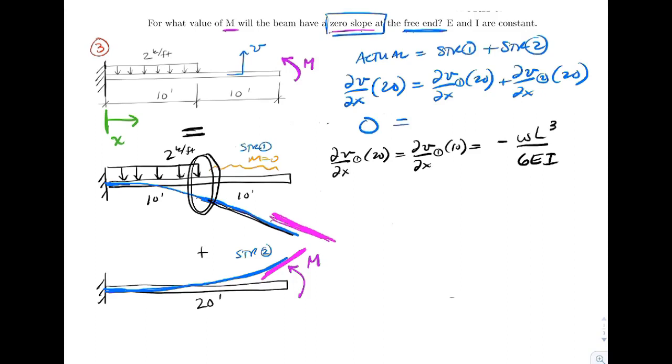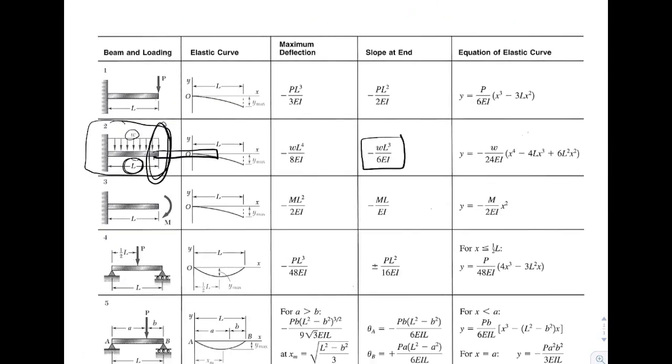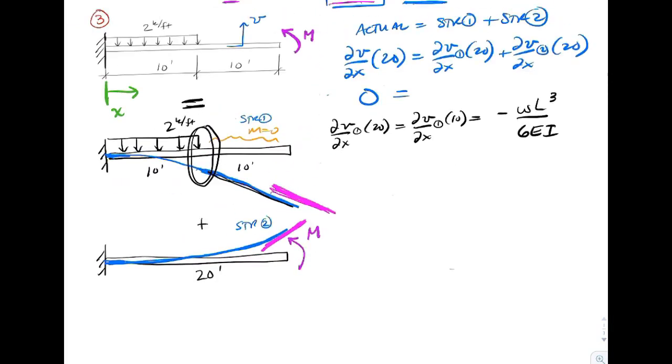Which is going to be equal to minus WL to the third over 6EI. Let's go ahead and look at that one more time. There's the WL to the third over 6EI. For our beam, the slope is down, so we're going to use negative. So for this calculation we end up with minus 2 kip per feet times 10 feet, the length of the distributed load, to the third over 6EI.